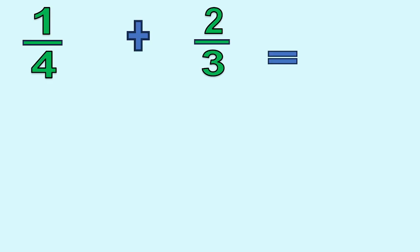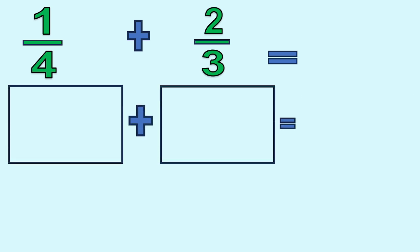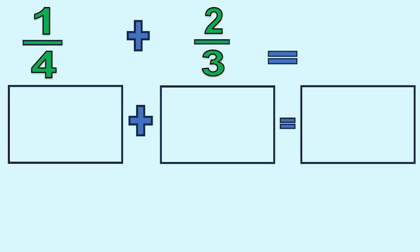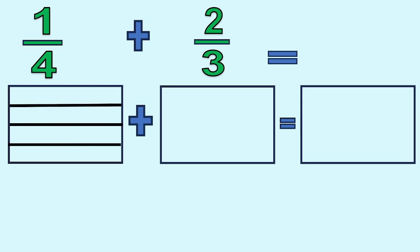First, let's add dissimilar fractions of 2 proper fractions. We have here 1 fourth plus 2 thirds. Let us find the sum by solving using models or drawing. Each model represents each fraction. Remember that the rectangles are the same size. I'm going to draw horizontal lines to represent 1 fourth — divide the rectangle into 4 pieces because the denominator is 4, and shade 1 of these 4.